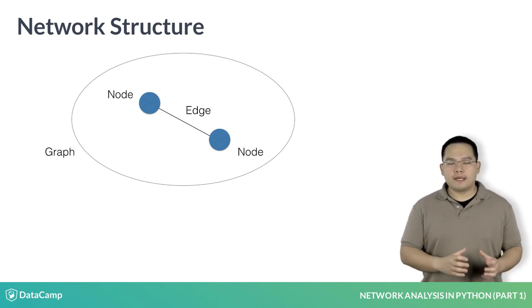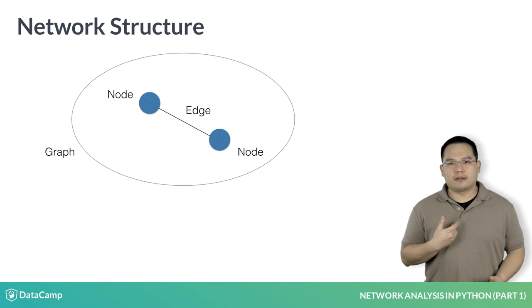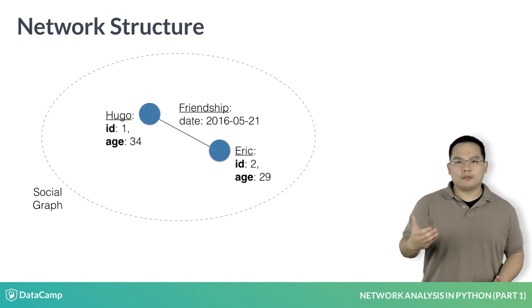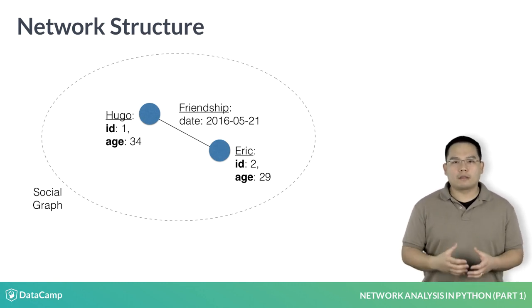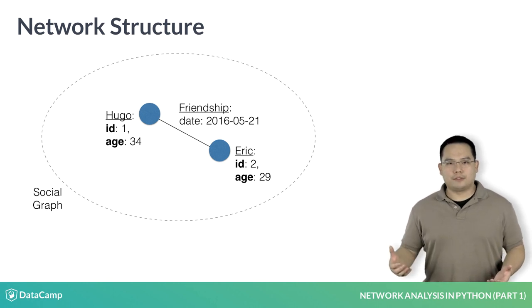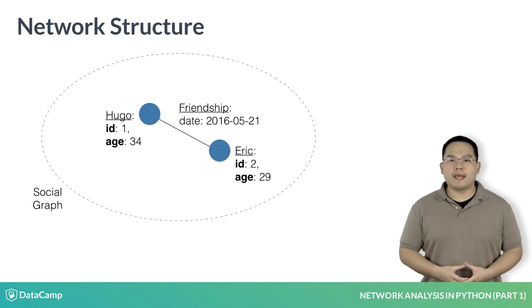Nodes and edges can have metadata associated with them. For example, let's say there are two friends, Hugo and myself, who met on the 21st of May, 2016. In this case, the nodes may be Hugo and myself, with metadata stored in a key value pair as ID and age. The friendship is represented as a line between the two nodes and may have metadata, such as date, which represents the date on which we first met.